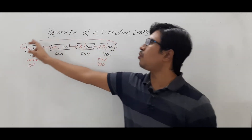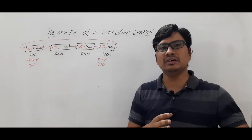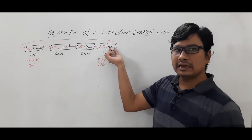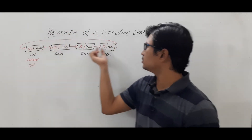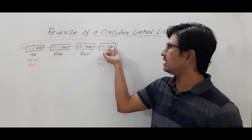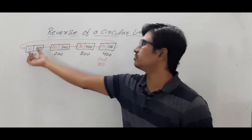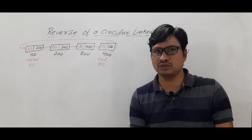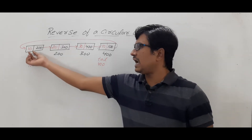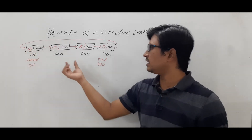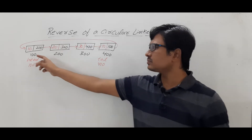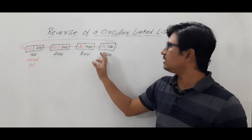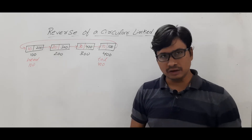The last node should point to the first node — that is what gives it the circular characteristic. So this last node will have the address of the first node, and the pointer consists of that address. Now, to identify which is the first node and which is the last node, we have two pointers called head and tail. Head pointer points to the first node and tail pointer points to the last node.